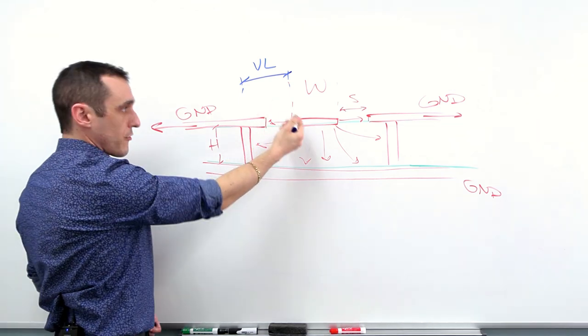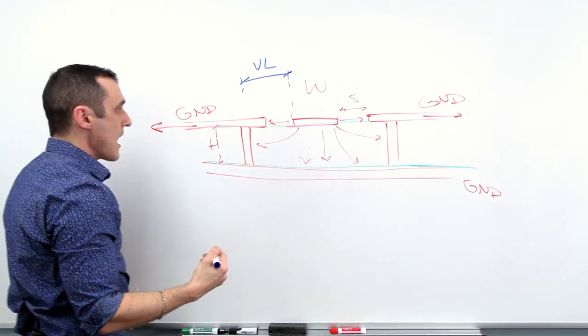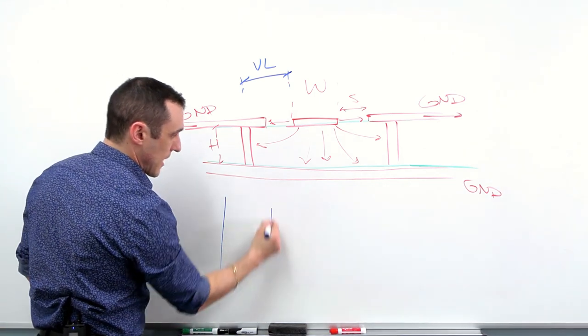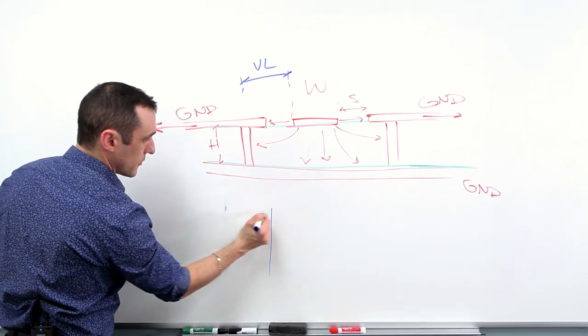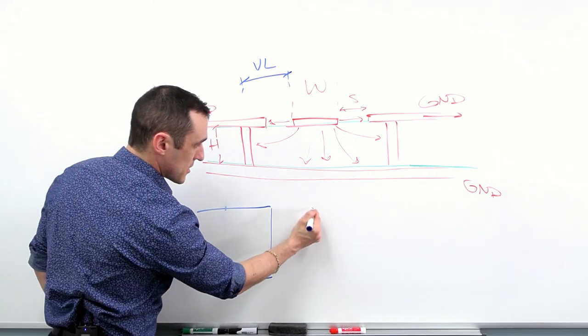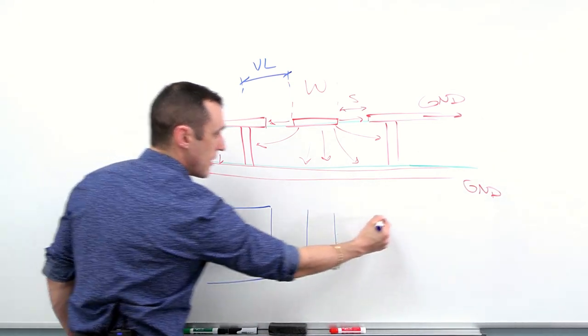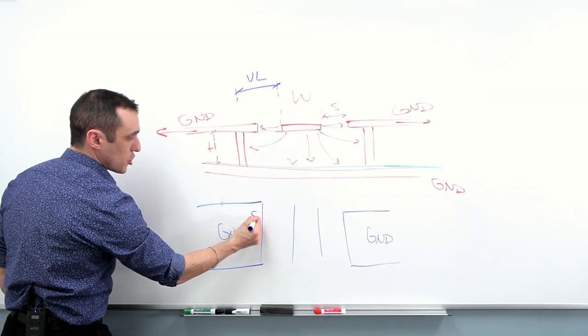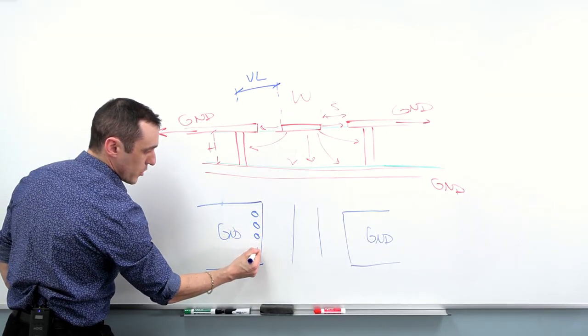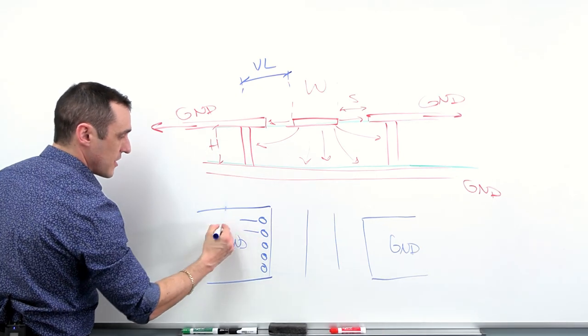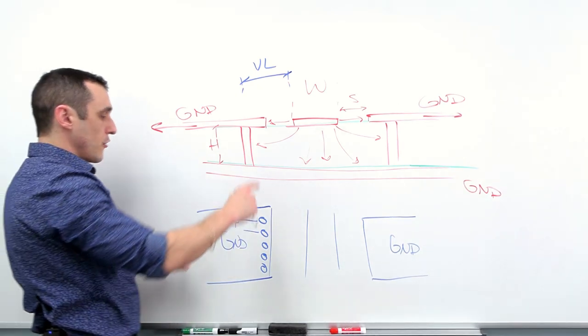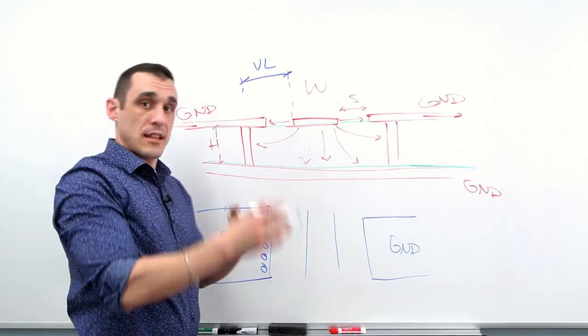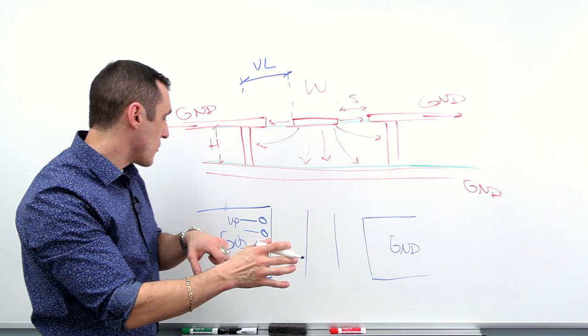So we'll just call this VL, the length of the via away from the trace. And then if you look at this from the top, this is my trace coming down the middle, this is all of my ground pour. And then you need to choose the spacing between all of these vias. So this is called the via pitch, or we can just call it VP.